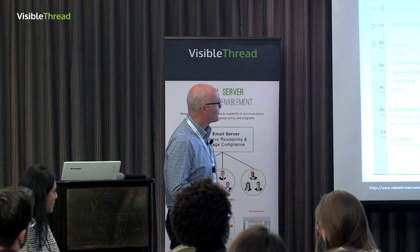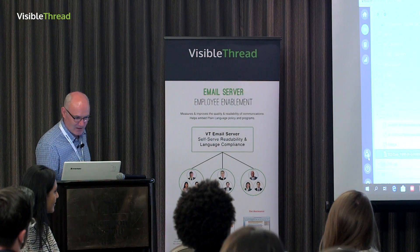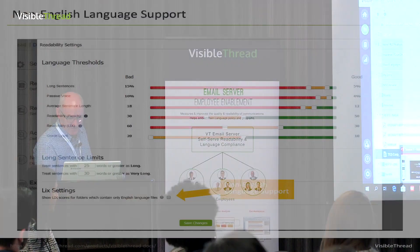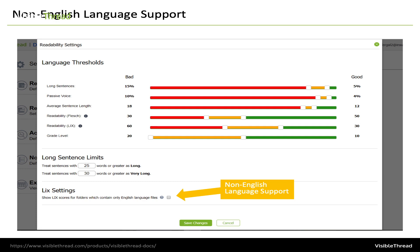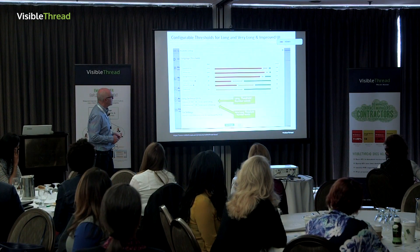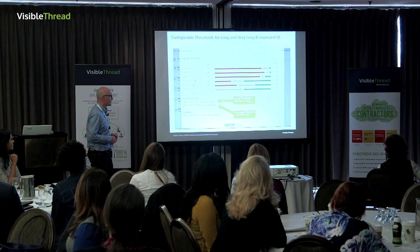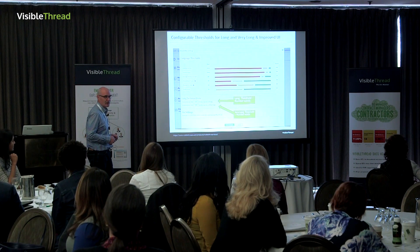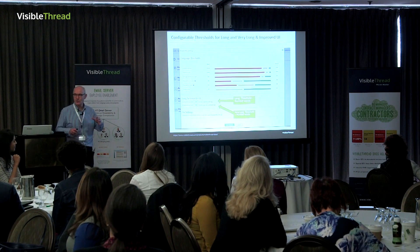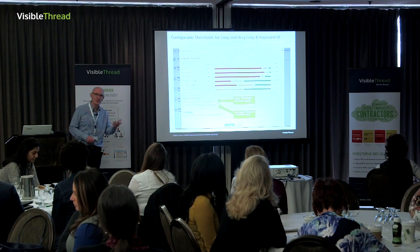This is a flashy new screen — the old one was horrible. Aside from the flashy bar things, the serious element is: treat sentences with 25 words or greater as long, or 30 words as very long — and that's now configurable in your environment. It was never configurable before. This gives more nuance and will help those focused on readability cleansing get more nuanced to their environment, because you're the best determinator of what is really long versus very long in your context.